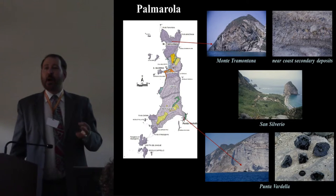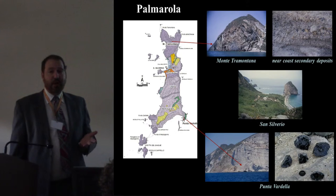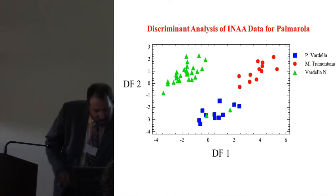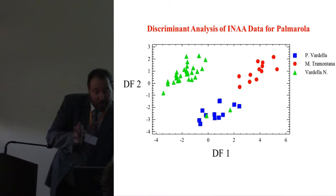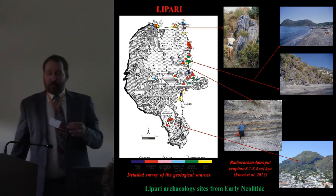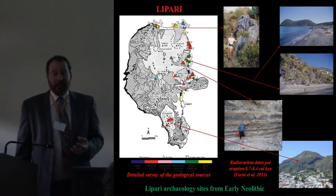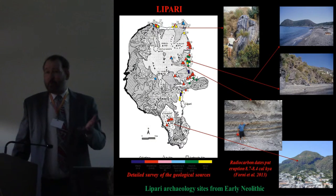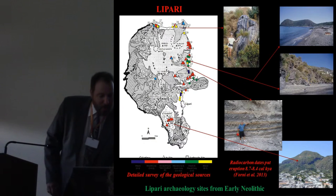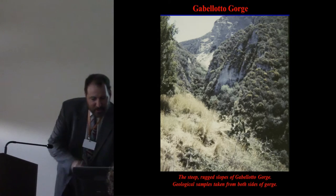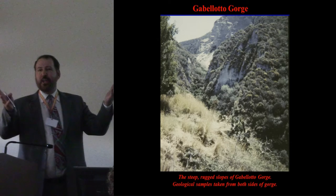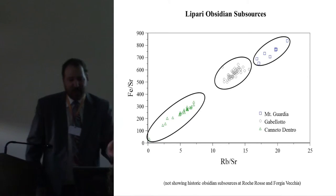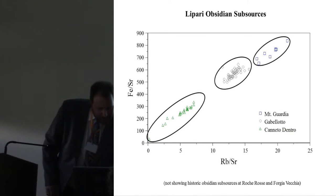The fact that obsidian comes from island sources right away involves some kind of maritime transport. Palmarola is never an occupied island — a tiny little thing — and we can distinguish multiple sources from different parts of Palmarola. Lipari, just north of Sicily, was occupied beginning in the Neolithic. Multiple sources there as well; these are easily accessible, some right close to the shoreline, and much obsidian may be found at the bottom of cliffs rather than requiring climbing. We can distinguish these Lipari subgroups as well.